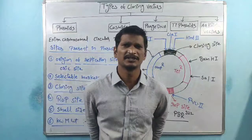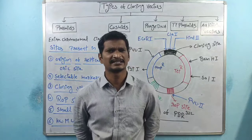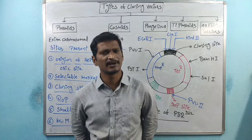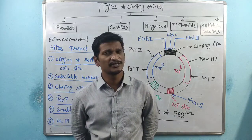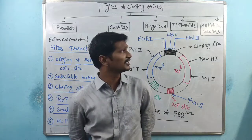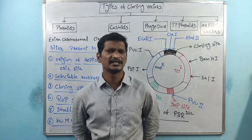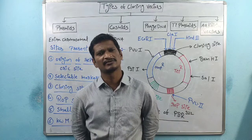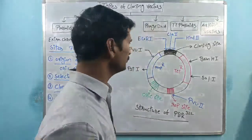Next is the Ti plasmid. There is an Agrobacterium tumefaciens bacteria which infects plant cells. The bacteria contains the Ti plasmid, and we are using that Ti plasmid as a cloning vector. Last one is artificial vectors — vectors which are designed within the laboratory, such as Bacterial Artificial Chromosome. We will discuss each one by one.